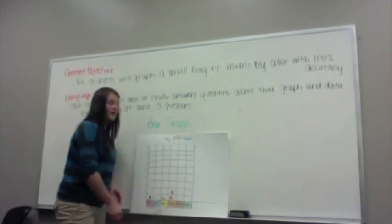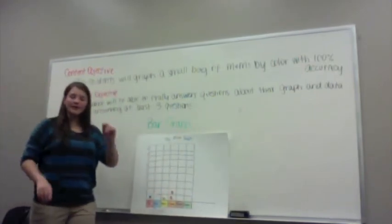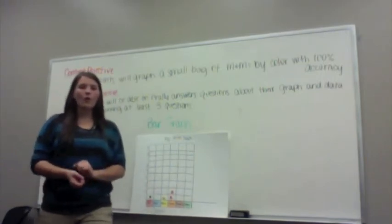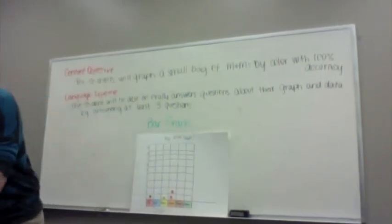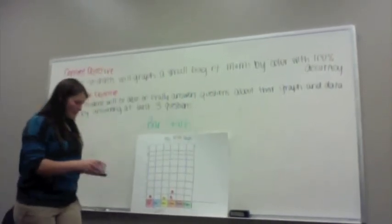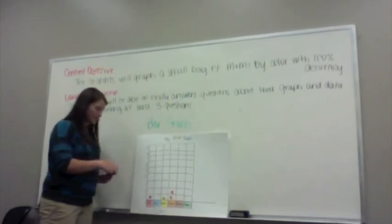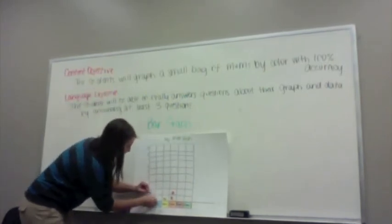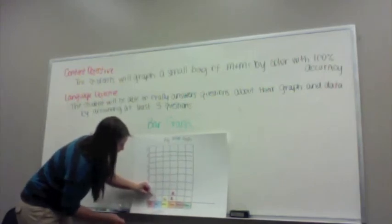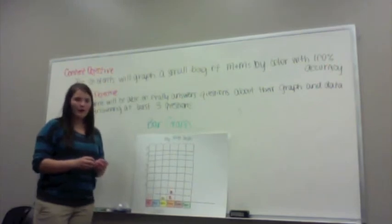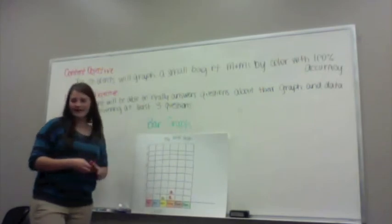After you have emptied your entire bag, you're going to take the M&Ms off one by one and color the square the correct color. Since we have a red, we will take our red crayon, take the M&M off, and color in the box. But will we color more than one red M&M square if we don't have more than one red M&M? No. Perfect. I think you guys got the hang of it.